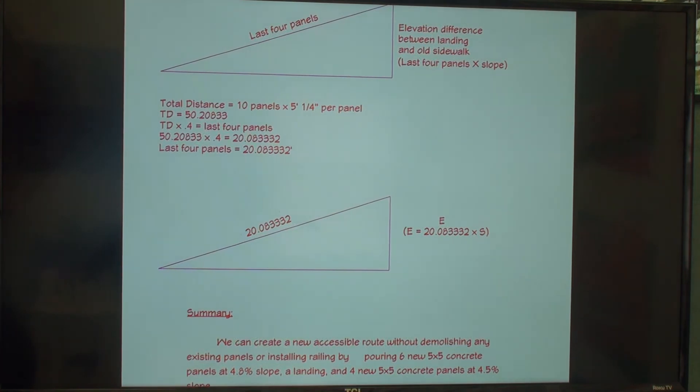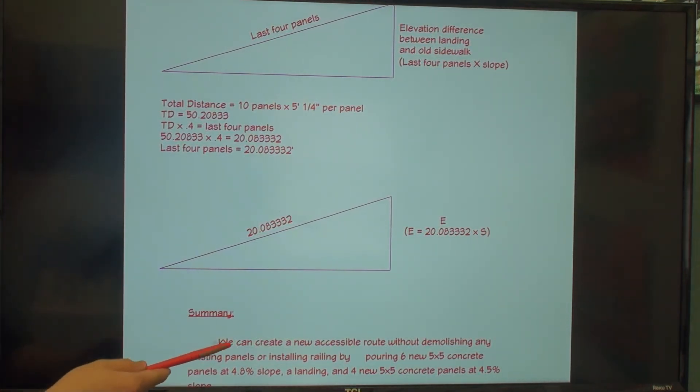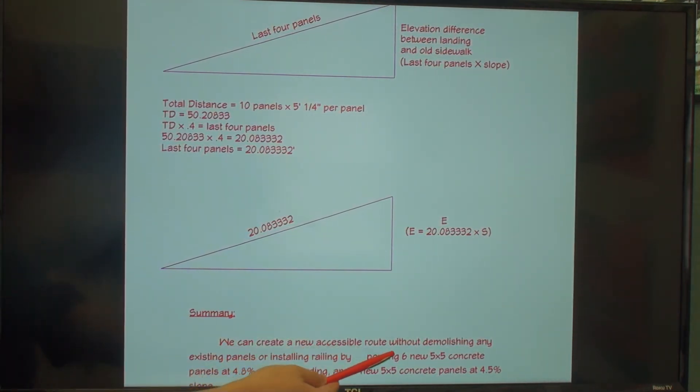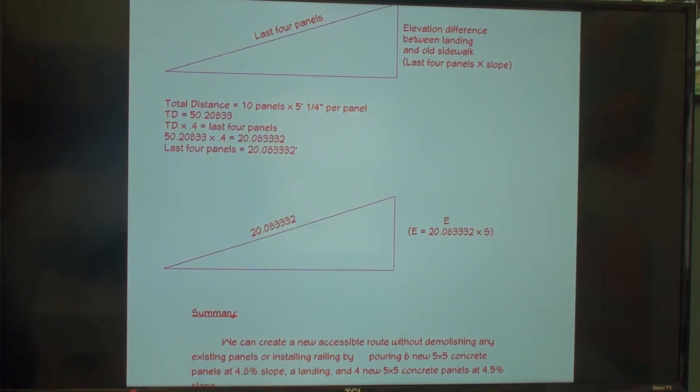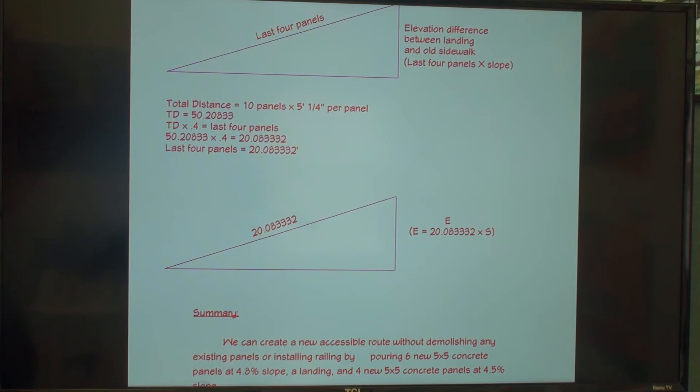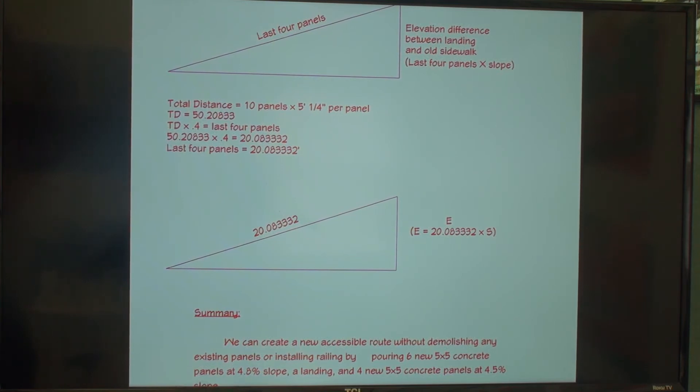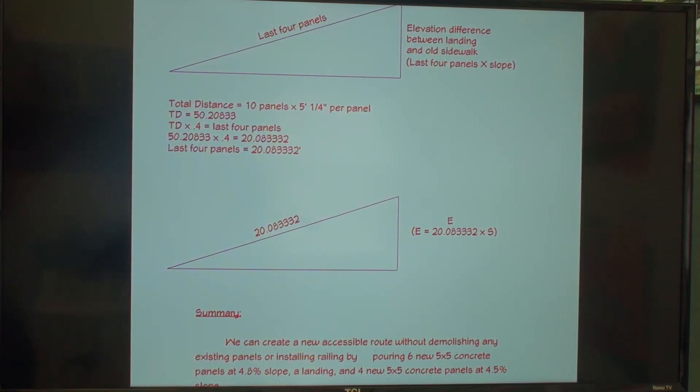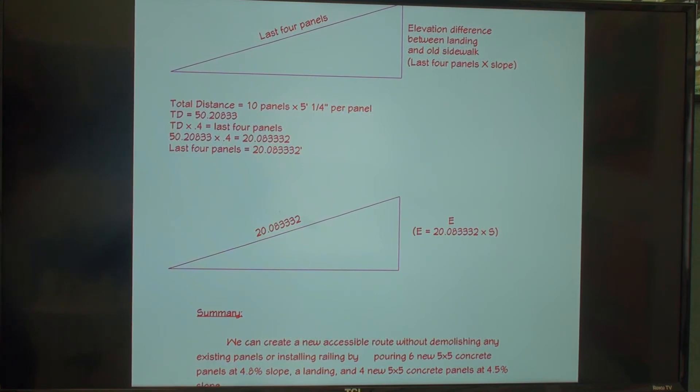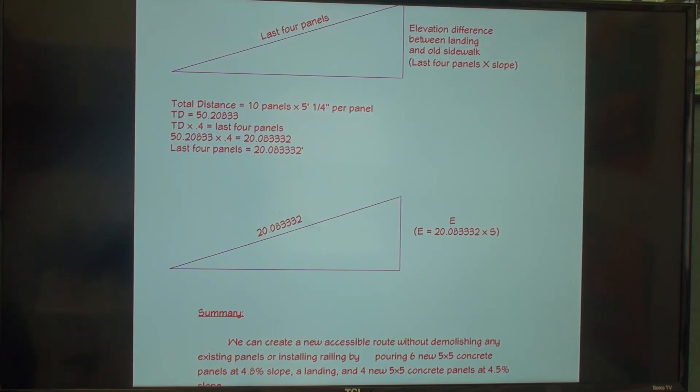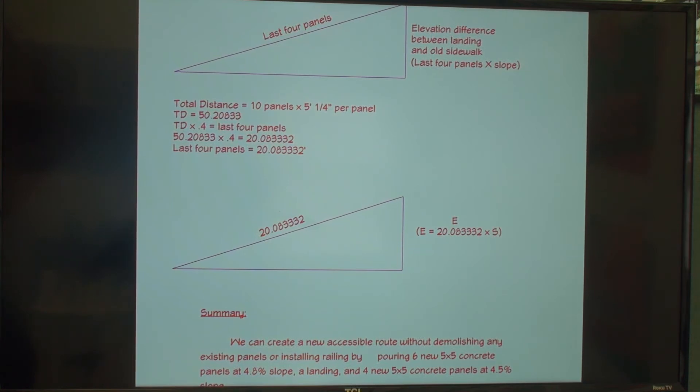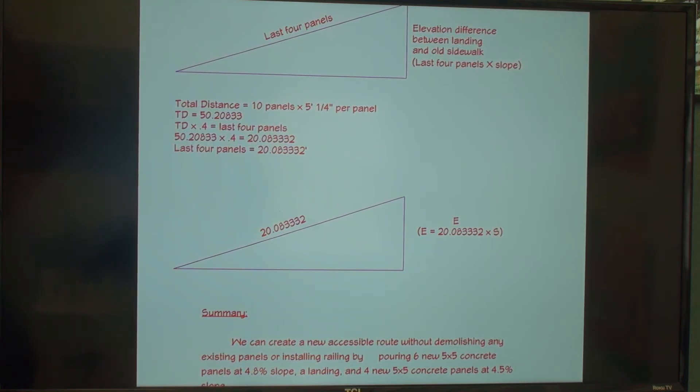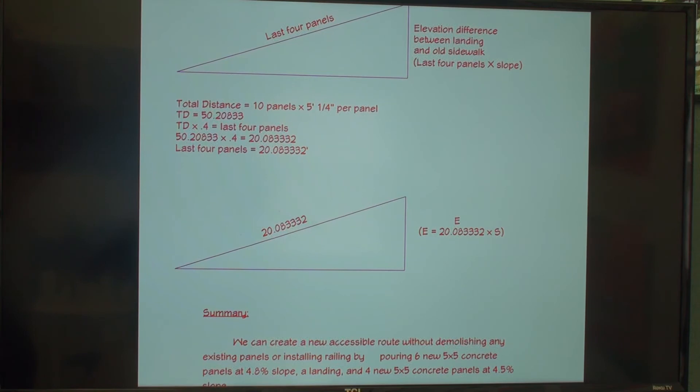So in conclusion for this problem, we can create a new accessible route without demolishing any existing panels or installing railing by pouring six new 5x5 concrete panels at 4.8% slope, a landing, and four new 5x5 concrete panels at 4.5% slope. That was a difficult problem, but it's not the only difficult problem you're likely to encounter when doing ADA work.